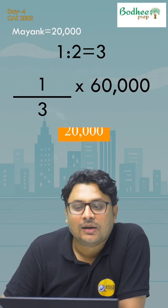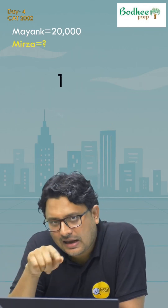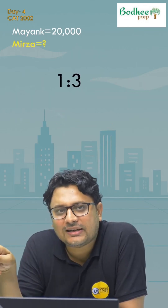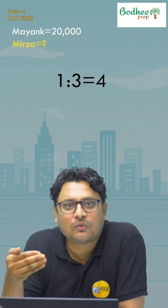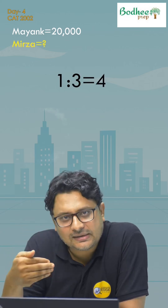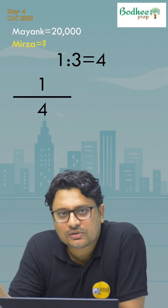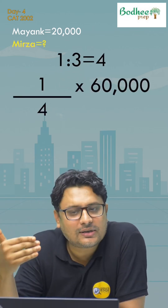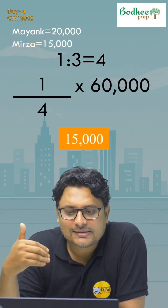Similarly for Mirza: one third of others means Mirza gets 1 and others get 3. The total is 4. So Mirza gets 1 out of 4 into 60,000, which is 15,000.